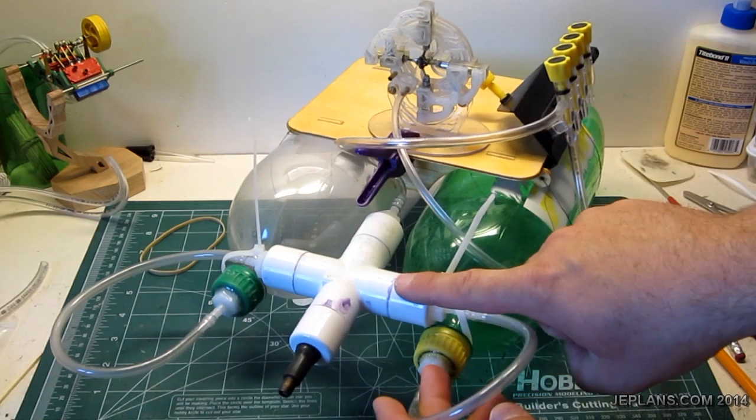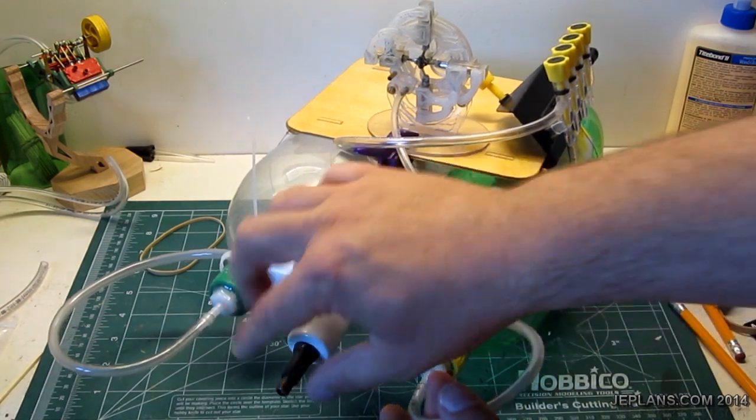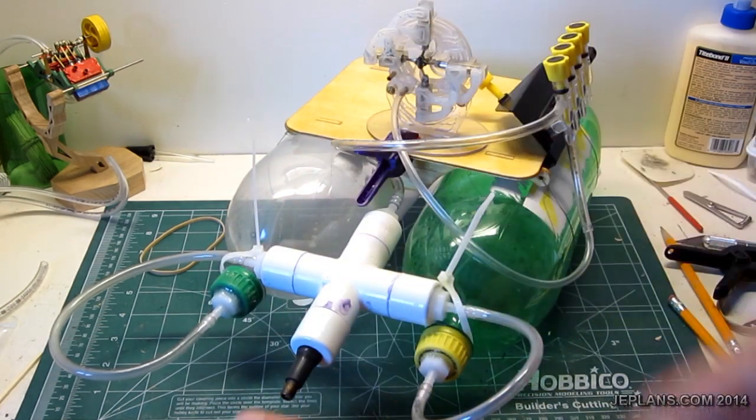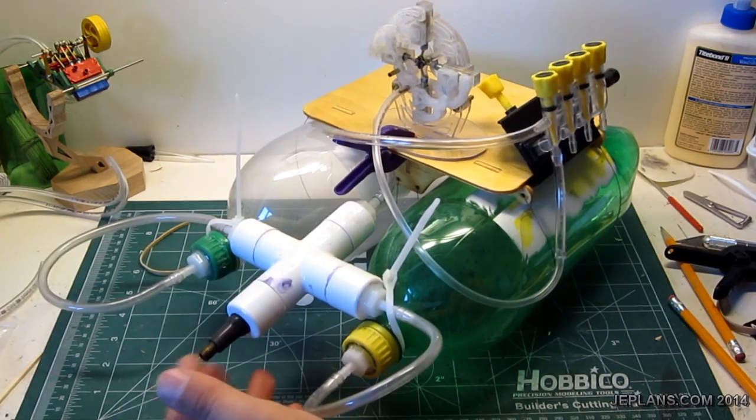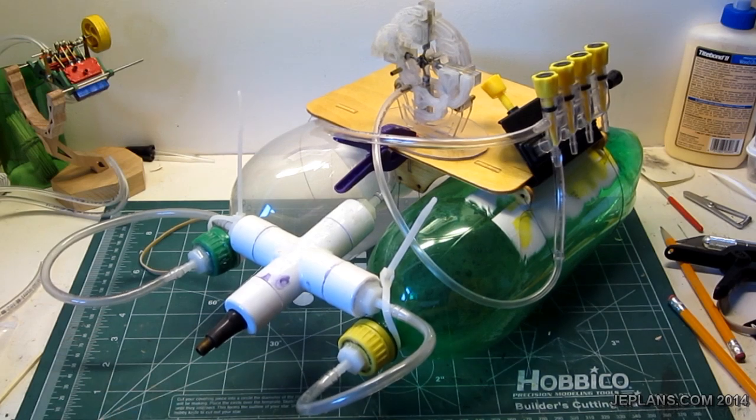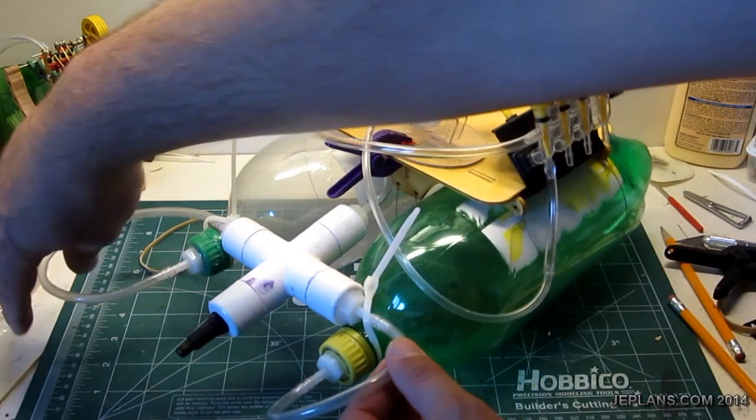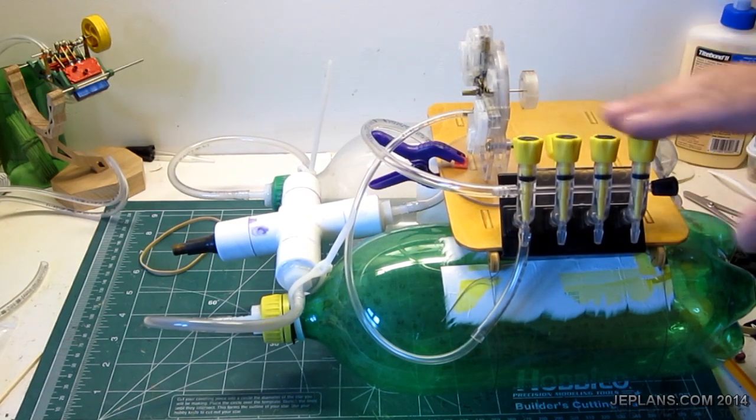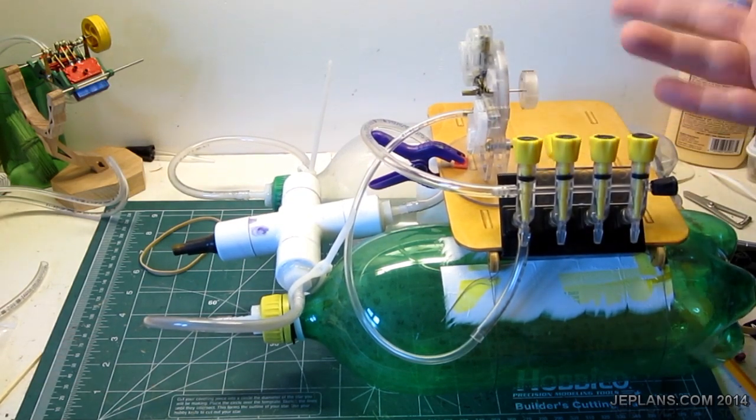Since then I've added this front piece that basically has a tire valve to pump it up. So it has its check valve in there so I can pump it up and take it off. I'm good to go. And I have this feeding out to a tube to an aquarium air control.